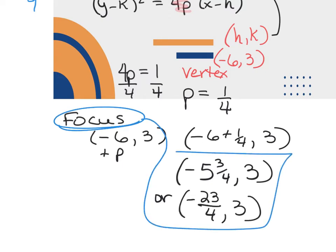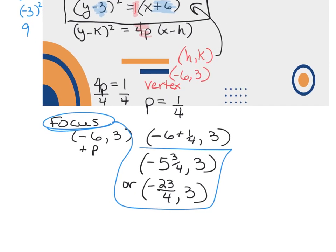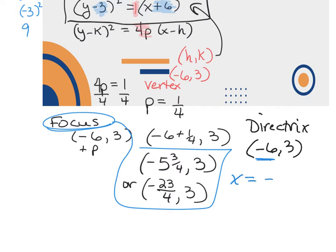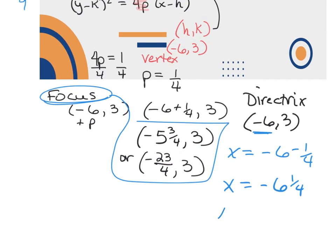For the directrix, it's the opposite of p. I take the vertex, negative 6, positive 3, and since the non-squared variable is x, it's x equals negative 6 plus the opposite of p, which is negative 1/4. So the directrix is x equals negative 6 and 1/4, or as an improper fraction, x equals negative 25 over 4.